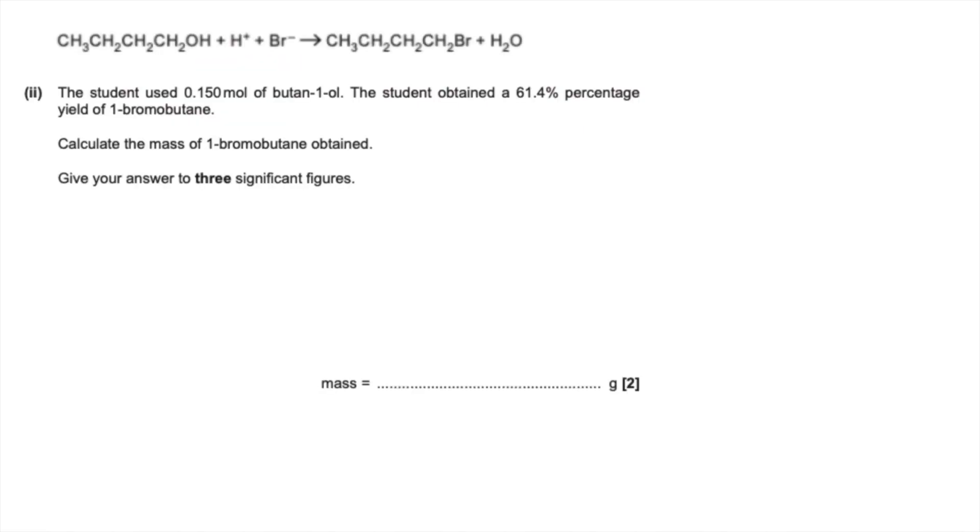Next part of A is the yield calculation. The student uses 0.15 moles of butan-1-ol and they get a 61.4 percentage yield of product. Calculate the mass that is obtained, to three significant figures. The first thing you do is work out the theoretical moles of 1-bromobutane. From the 1-to-1 ratio, it's going to be 0.15.